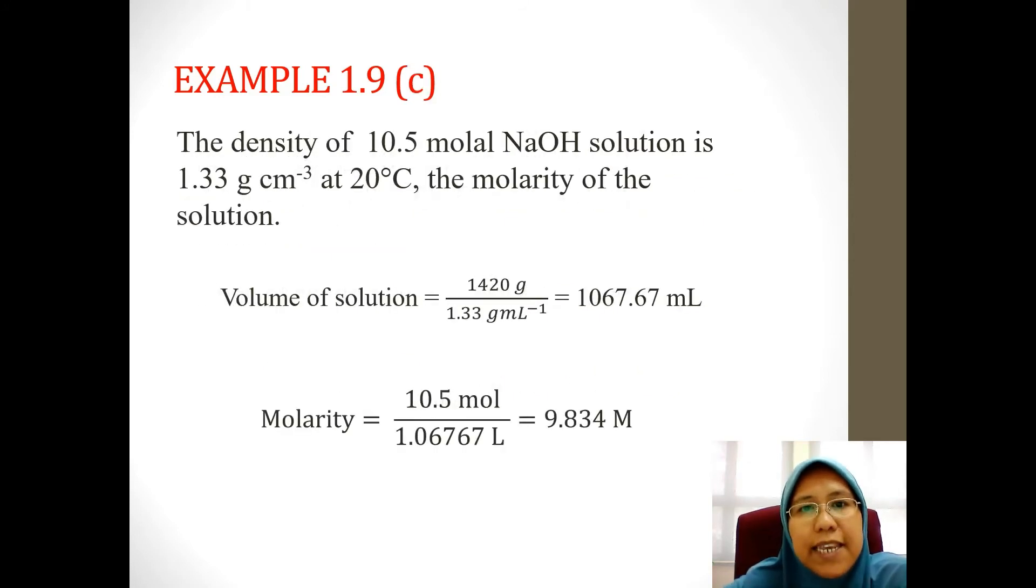Now C, we need to calculate the molarity of the solution. First, we need to find the volume of the solution. We have mass of the solution and density of the solution. So we use those two figures to get the volume, which is now become 1067.67 milliliters. Finally, we calculate the molarity by dividing 10.5 mol with 1.068 liters. The answer is 9.834 mol per liter.